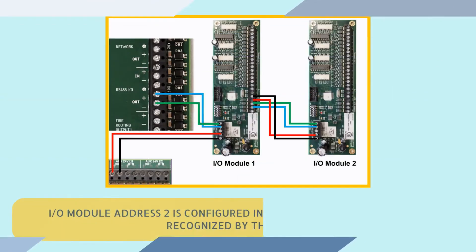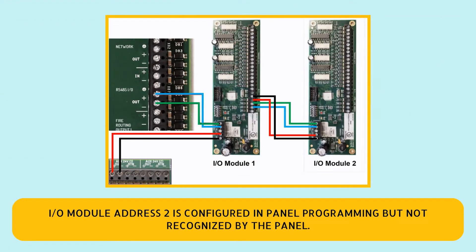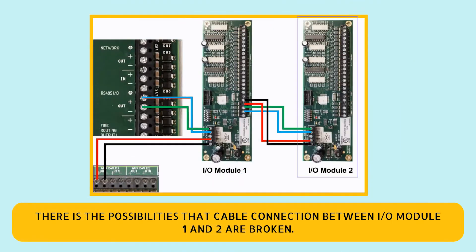I.O. module address 2 is configured in the panel programming but is not recognized by the panel. There is a possibility that the cable connection between I.O. module 1 and 2 is broken.